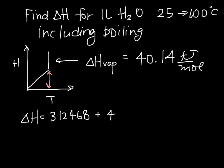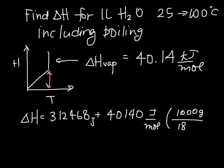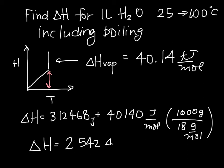The total enthalpy change is the heating contribution we calculated (312,468 J) plus 40,000 J/mol times approximately 55 moles. This gives a final delta H of 2,542,468 joules — quite a lot of energy just to boil one liter of water.